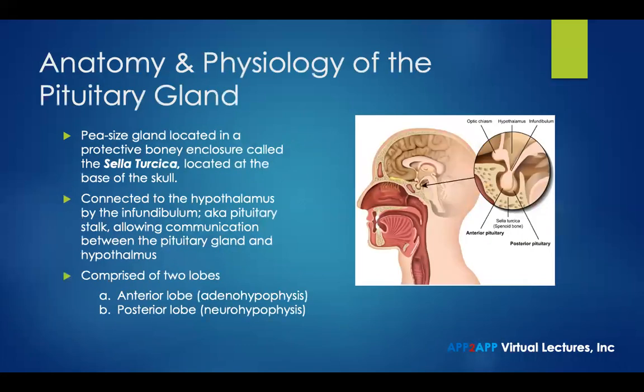To review briefly, I'm going to go over the anatomy and physiology of the pituitary gland. As we mentioned in part one, the pituitary gland is a pea-sized gland located in a protective bony structure known as the sella turcica, which is located at the base of the skull. It's connected to the hypothalamus by the infundibulum, also known as the pituitary stalk, and this allows communication between the pituitary gland and the hypothalamus.